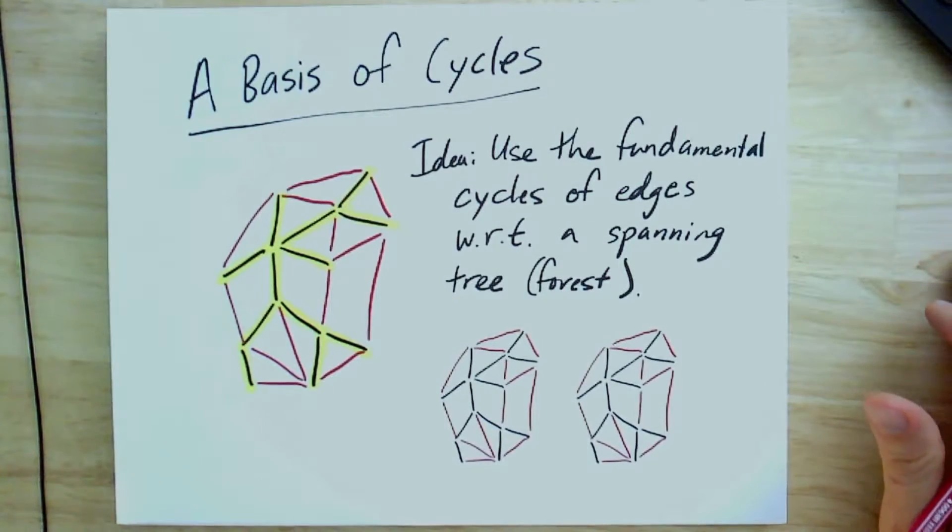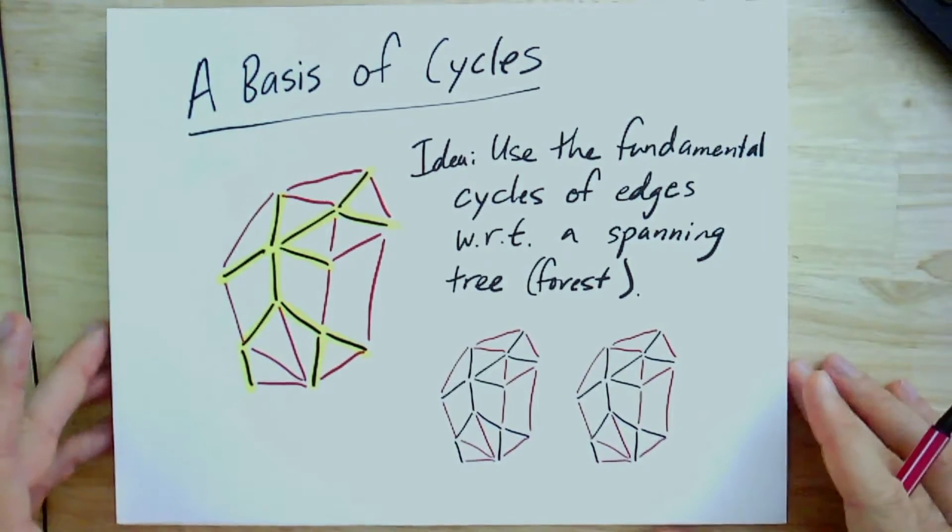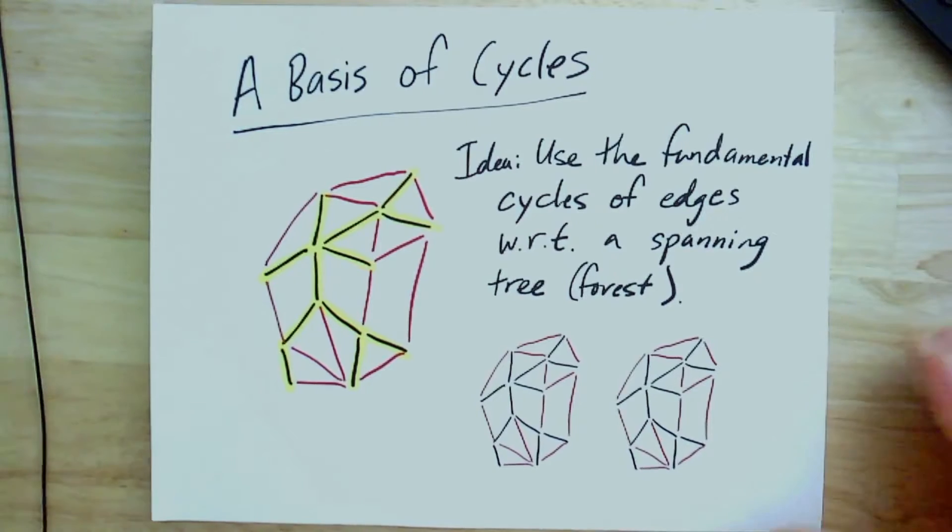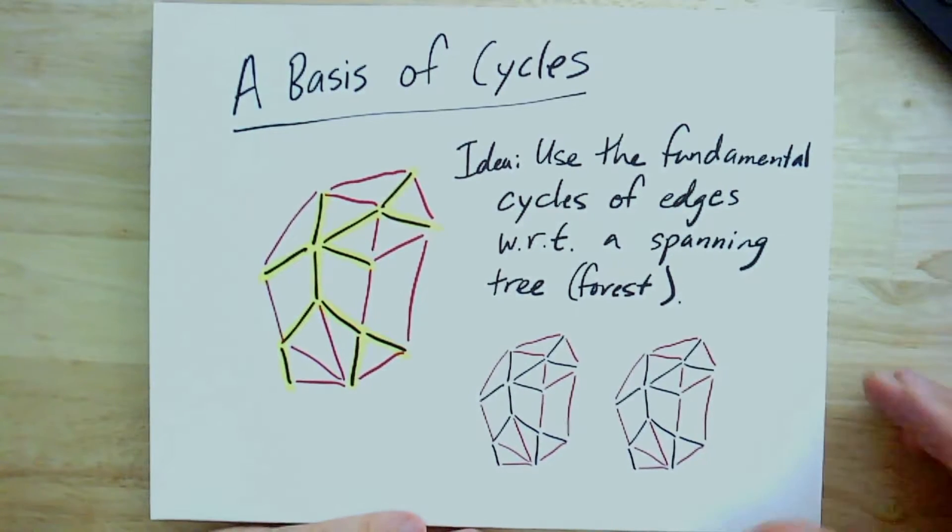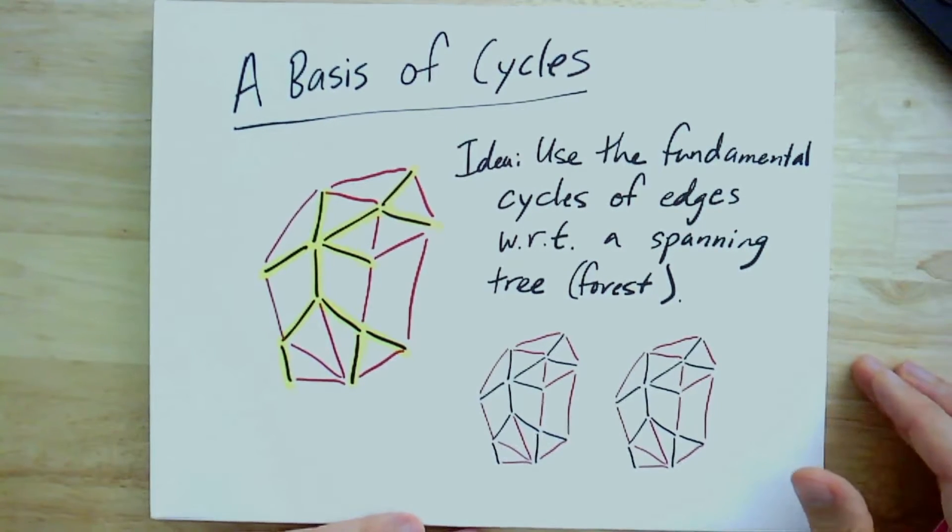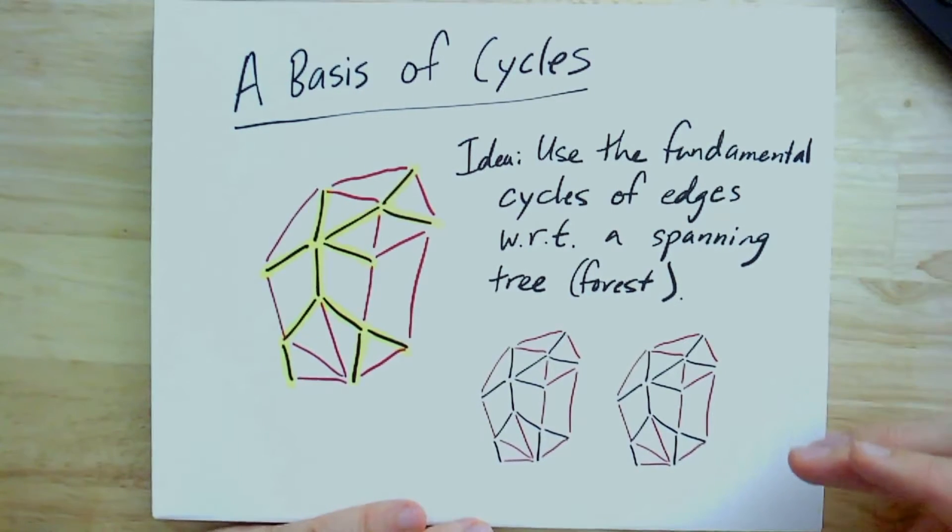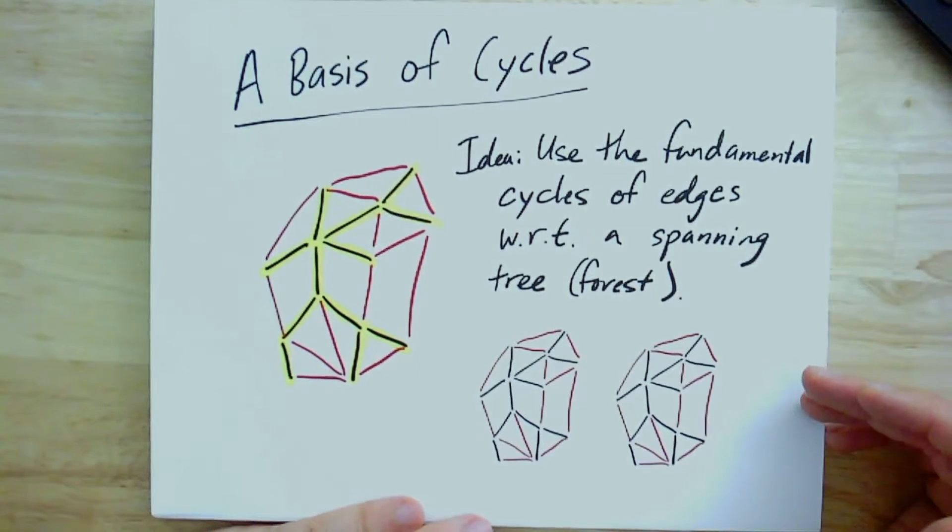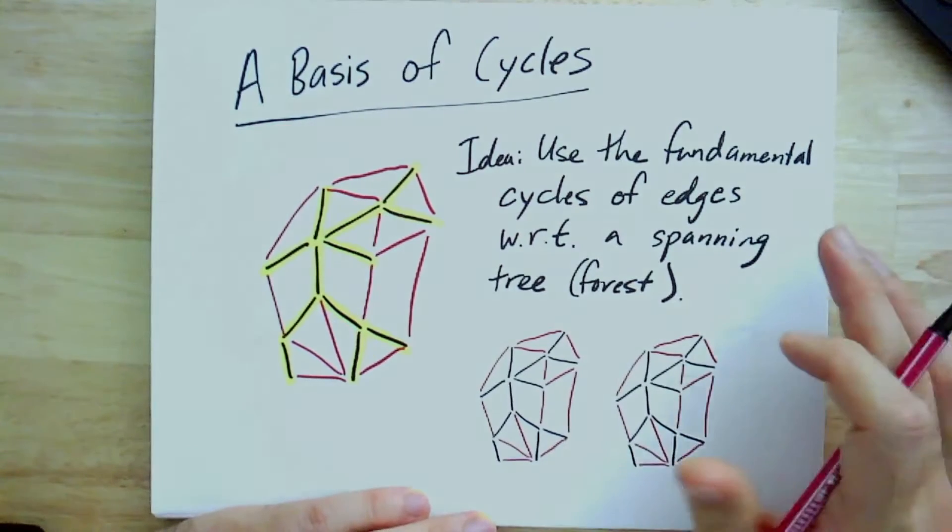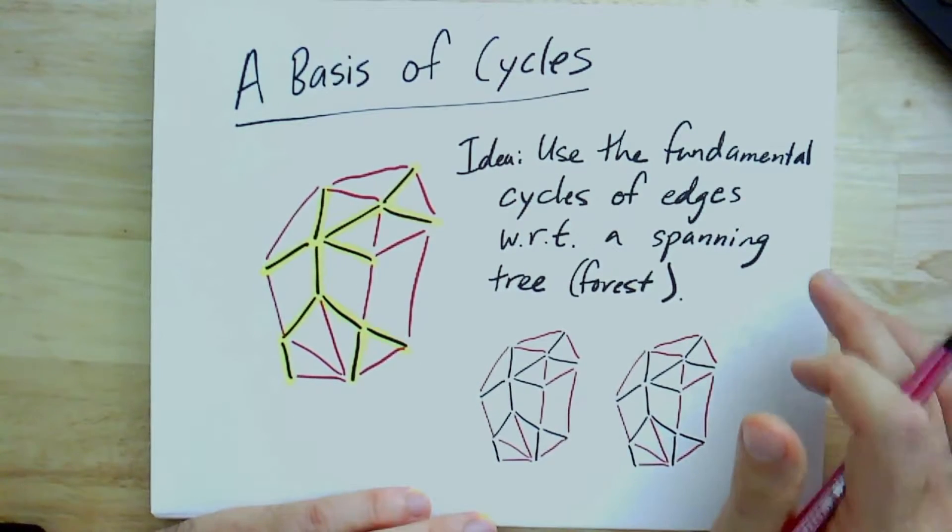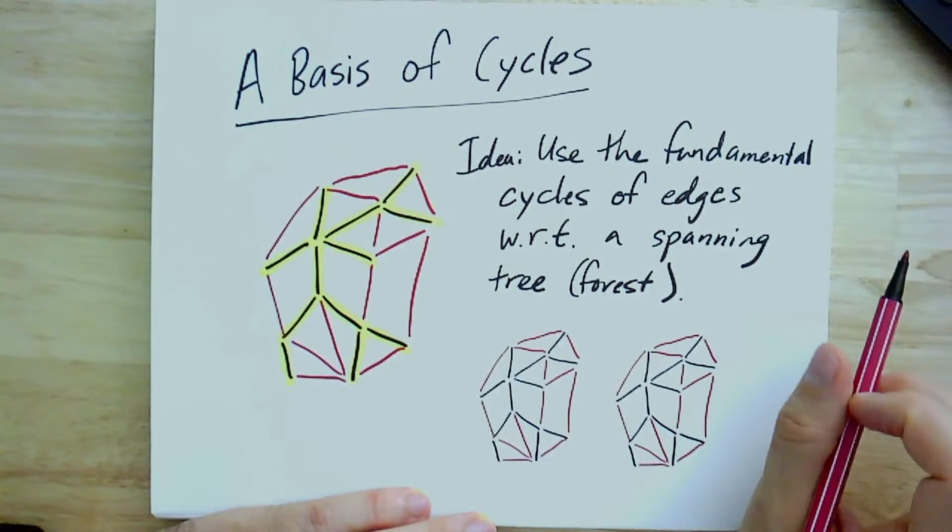So if we're going to think about what cycles generate the cycle space, we might try to be even more ambitious and find a basis for this space of cycles. So if you recall from linear algebra, a basis is going to be a set that generates the entire space, but also they're all linearly independent.